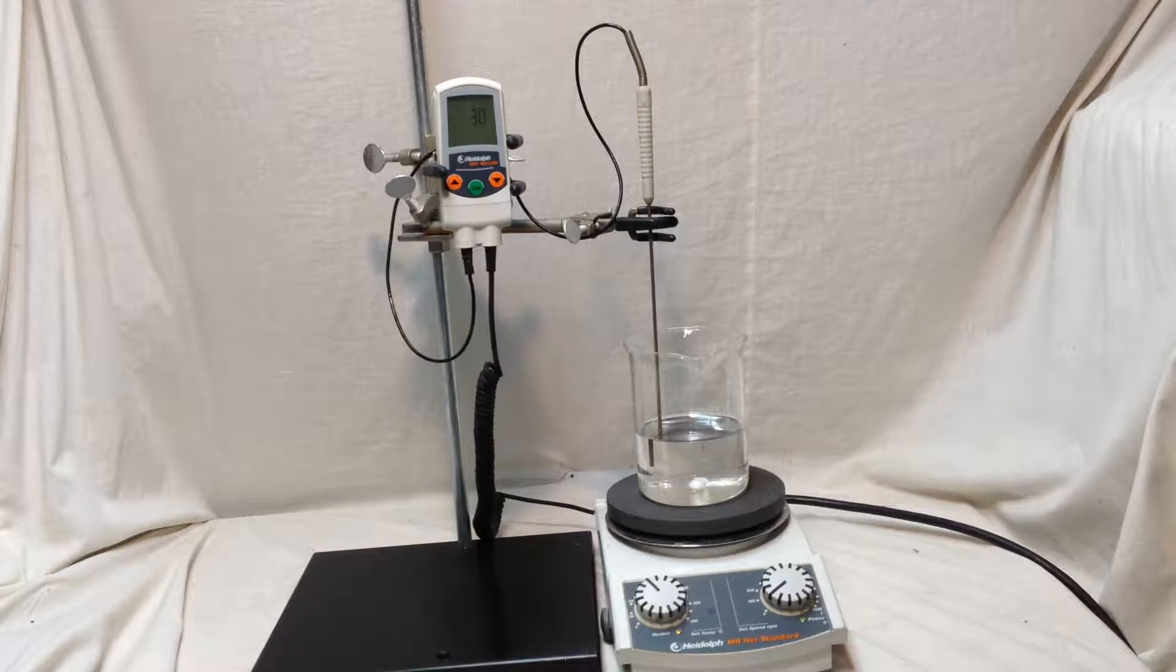Hello everyone, this is Heidolph MR Hei-Standard Plus EKT High Cone temperature sensor, which has a very good temperature measuring range of minus 50 to 300 degrees centigrade. The resolution is one degree centigrade and the measuring interval is 1.5 seconds. Let me show you how this works.